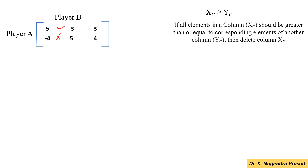Similarly, we have to compare the 1st column elements with the 3rd column. Here, 5 is greater than 3, but minus 4 is not greater than 4. So, the condition is not satisfied.